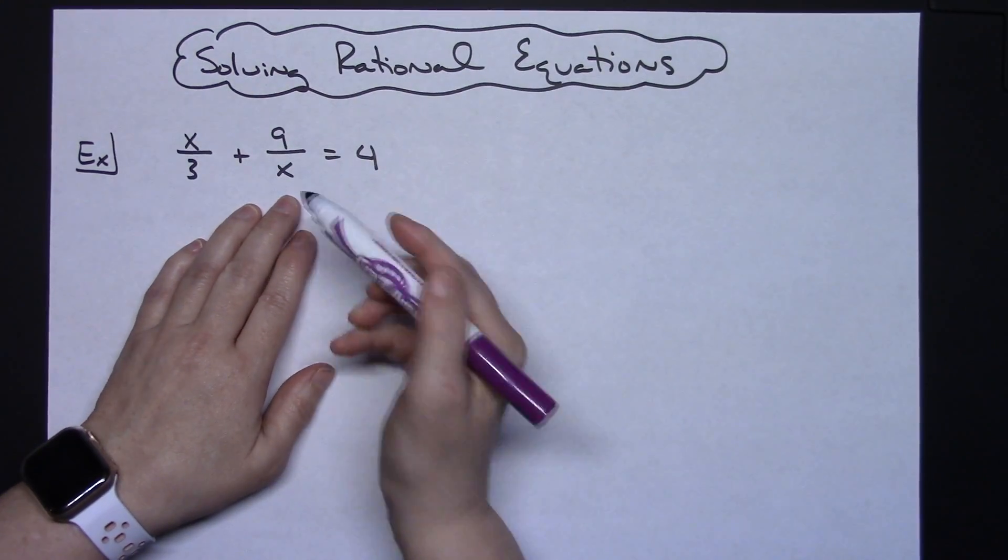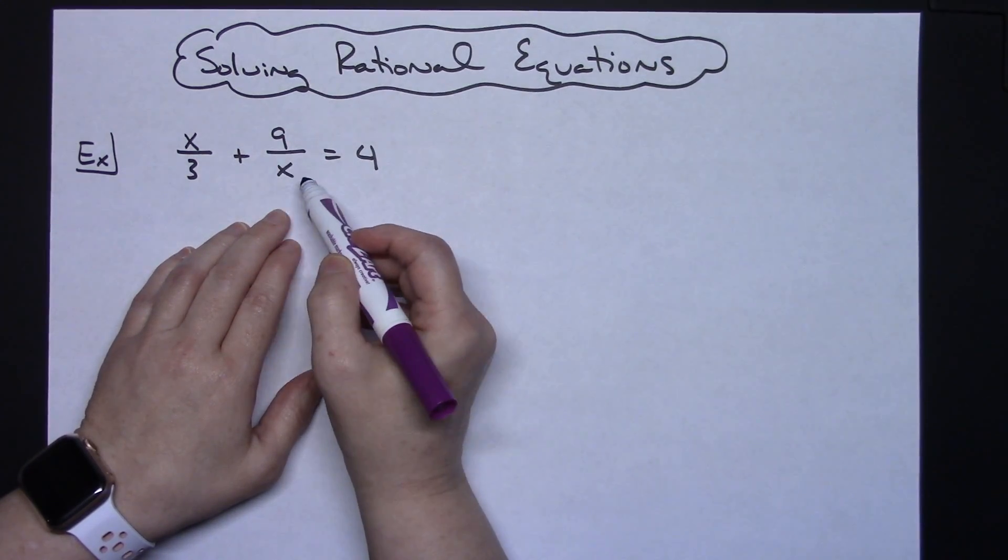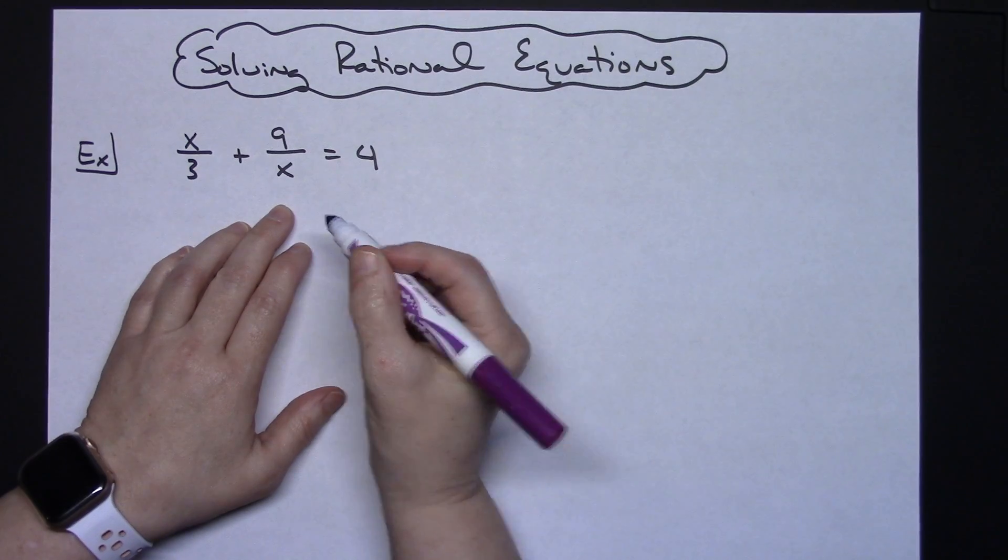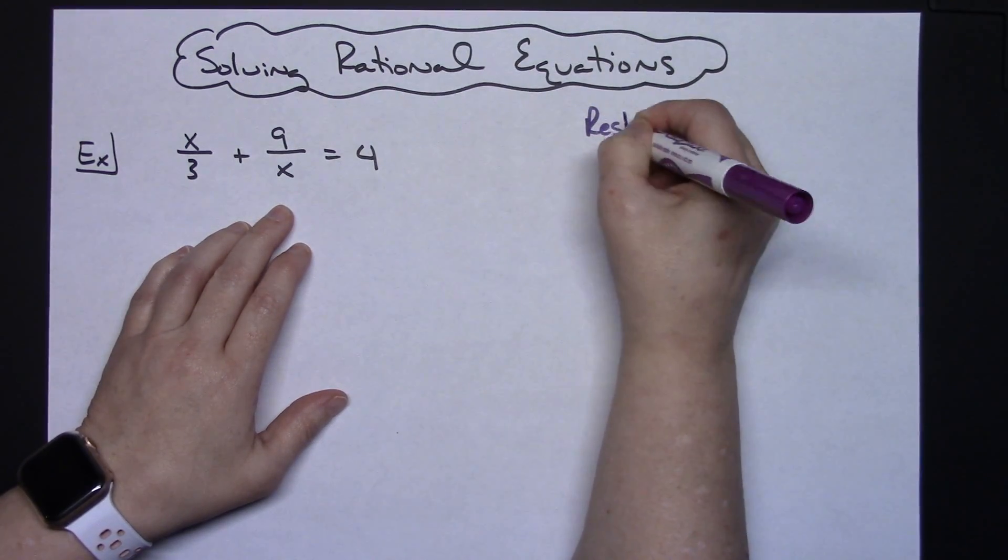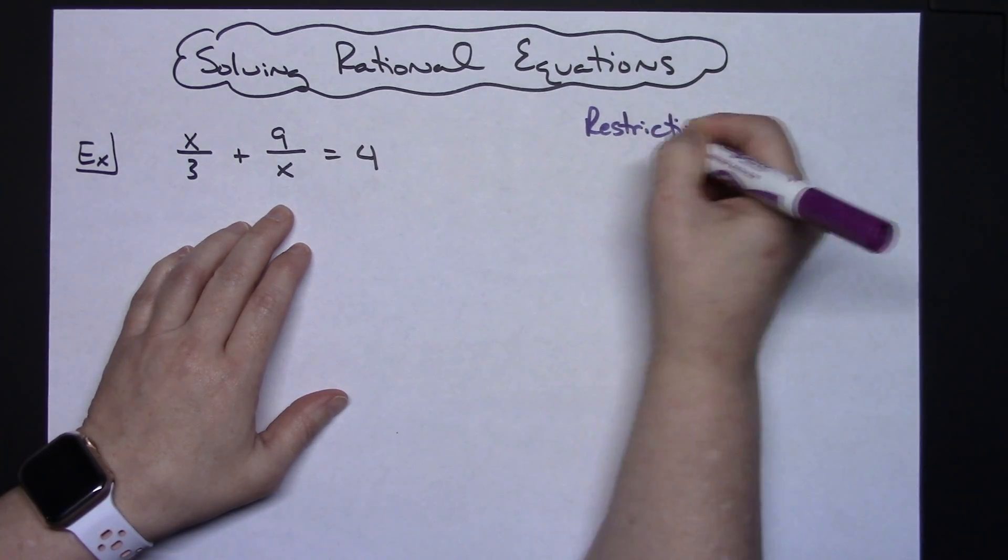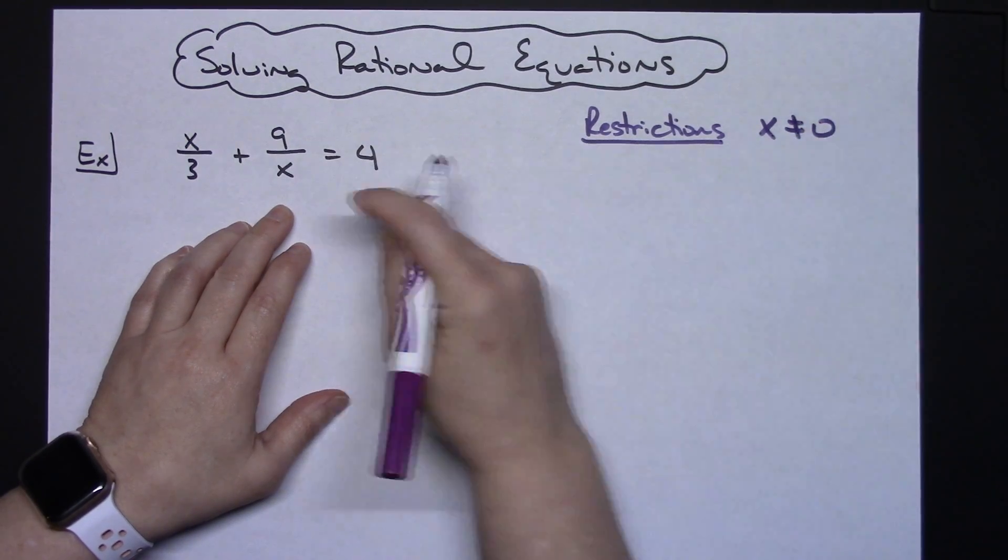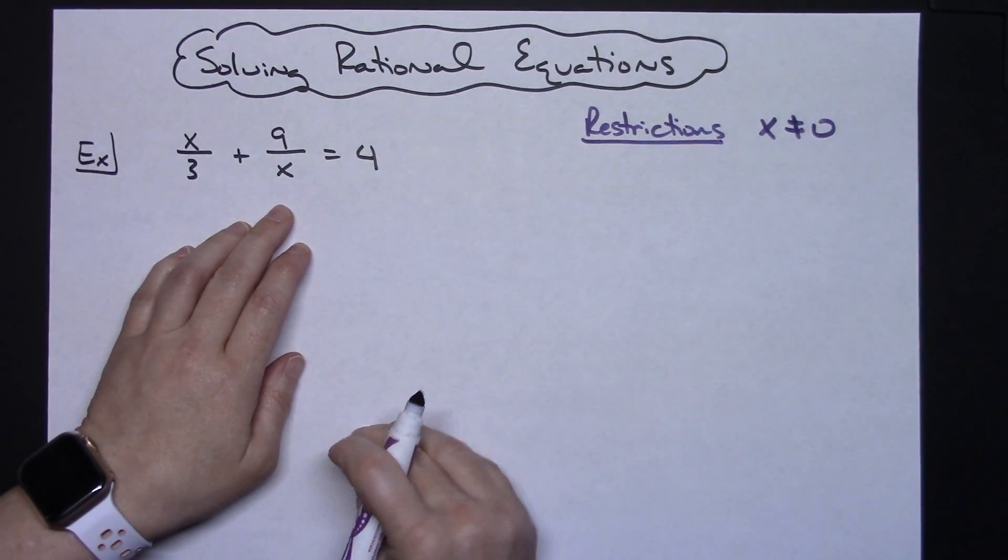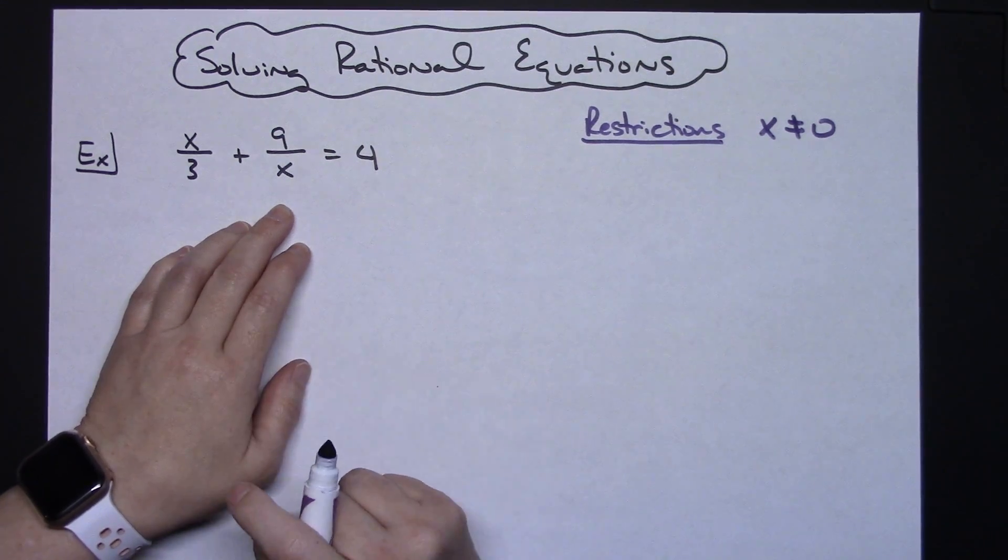This is 9 over x. So if the rule says I cannot divide by 0, then that means x cannot be 0. So I need to note that restriction before I even start working the problem. My restrictions on this: x cannot be 0. So if I solve this equation and get x equals 0, I know that can't really be a solution. I've got to throw it out because I have a restriction right there.